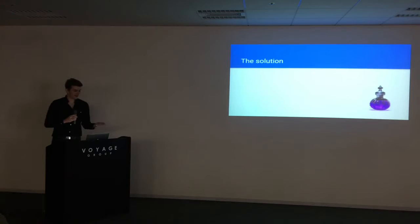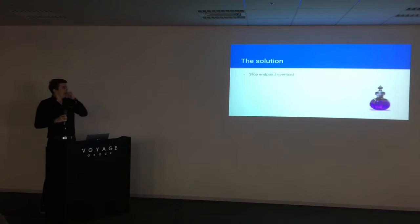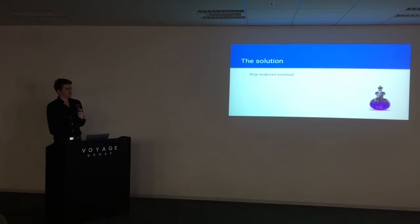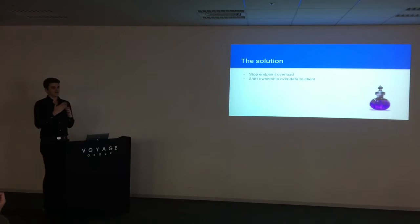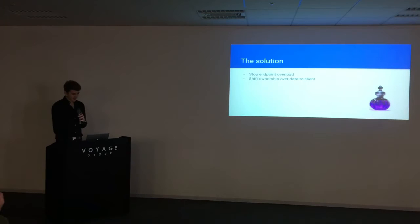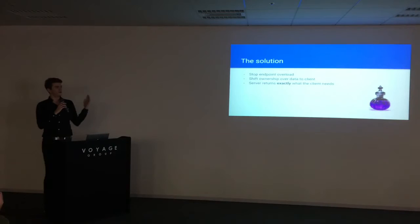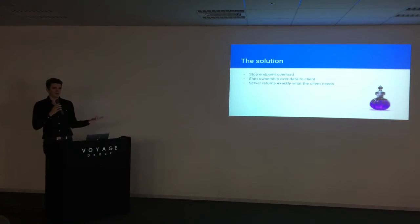So we need a solution — something better than that, something that can handle all these edge cases for us. We can stop the endpoint overload. Instead of having a million endpoints, we only have the endpoints we actually need for our application and nothing more. We shift the ownership of our data from the server to the client. Instead of pre-processing data and saying here's a document you can download, we say: hey client, you know what data you want. You want, for example, a profile picture — just tell me that and I give you that data. The server should not provide data in big documents for download. Instead, the server returns exactly what the client needs and nothing else.